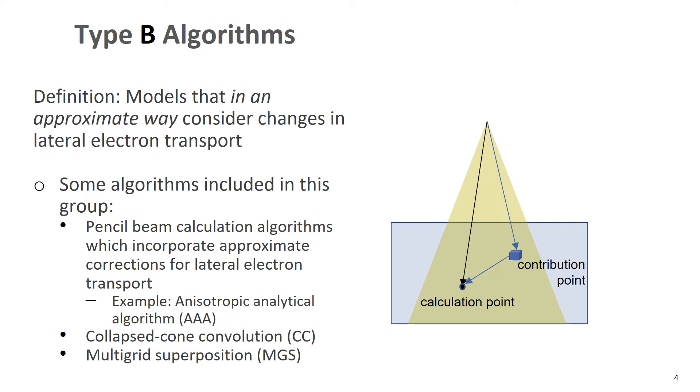Type B algorithms are models that in an approximate way consider changes in electron transport. So some algorithms that fit into this group are pencil beam calculation algorithms, which incorporate approximate corrections for lateral electron transport. One example would be the anisotropic analytical algorithm. Also collapse cone convolution and multi-grid superposition.